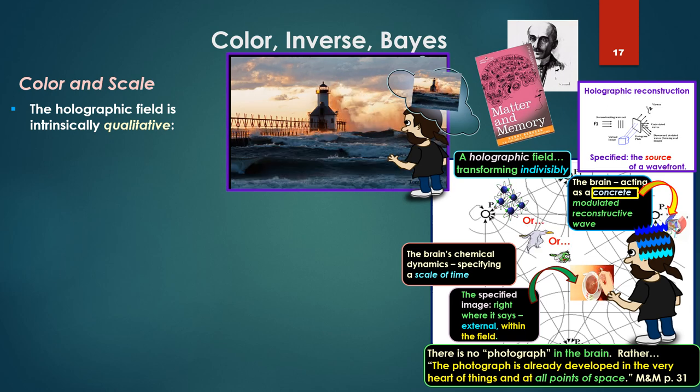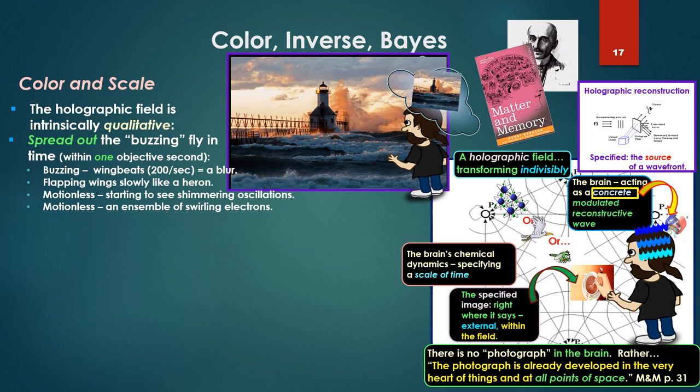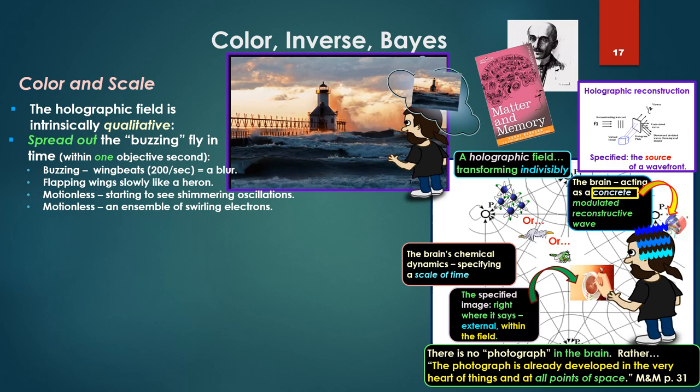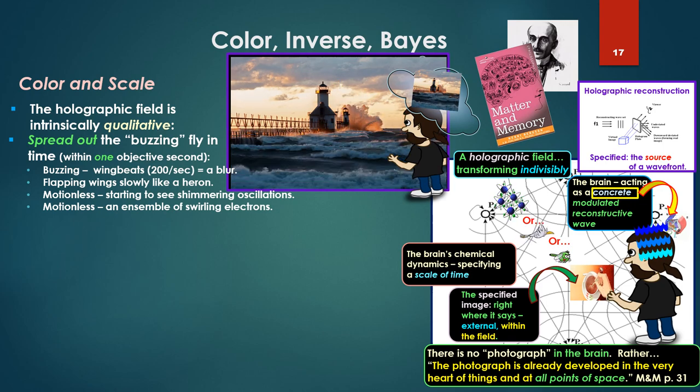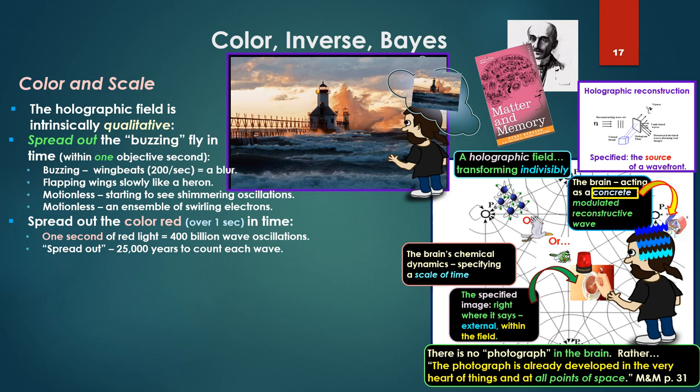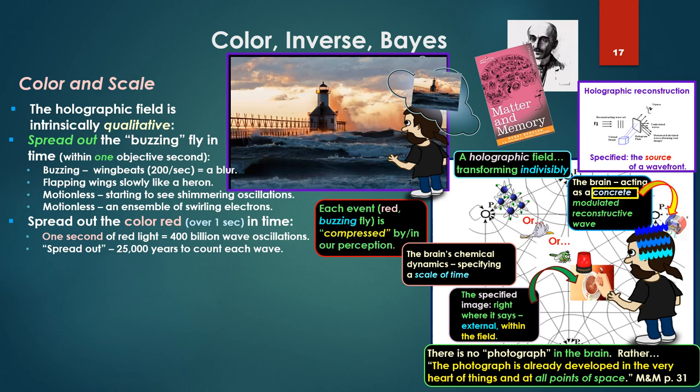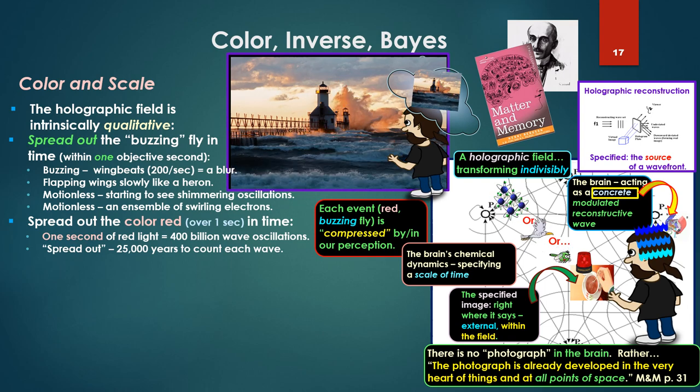The holographic field is intrinsically qualitative, spread out in time. The buzzing fly within one objective second, same measured by our clock hand, go from buzzing wing beats, 200 per second as seen as a blur, to flapping its wings slowly like a heron, to a motionless fly where we're starting to see shimmering crystalline oscillations of the fly as it is, or again motionless but an ensemble of whirling electrons. All possible specifications quality. Spread out the color red over again one second of objective time measured by the clock hand. One second of red light, 400 billion wave oscillations of a hermetic field spread out in time. Since we could count it, distinguish each event, each wave, it would take 25,000 years to count each wave. So each event, the red of the light, the buzzing of the fly, is compressed by and in our perception, amazingly compressed.